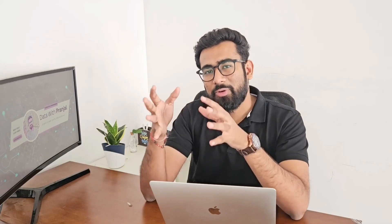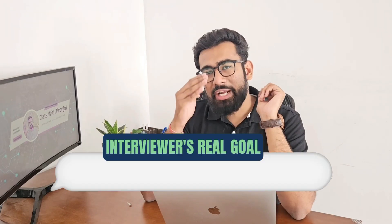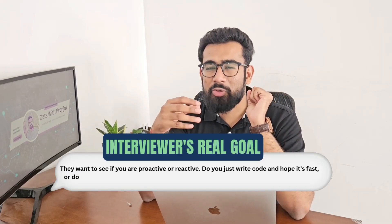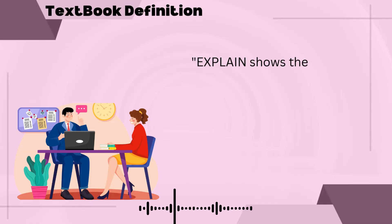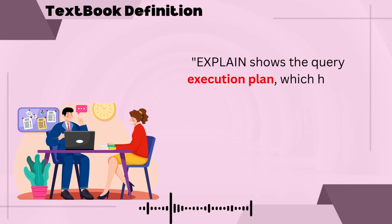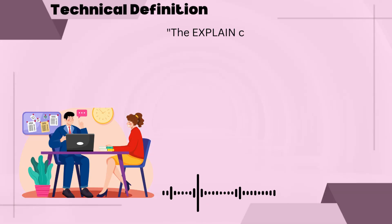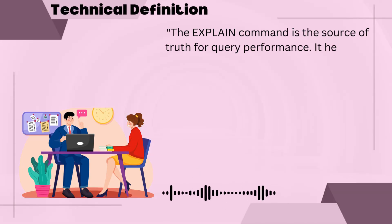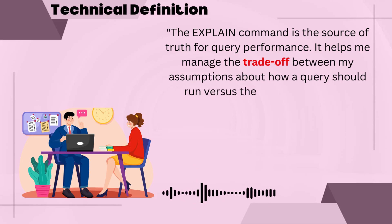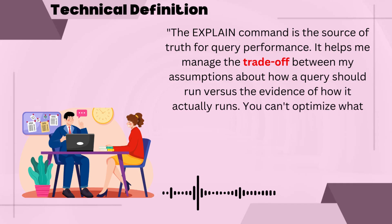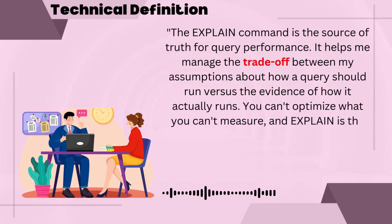The fifth and last question: the EXPLAIN keyword. The interviewer's goal here is to understand whether you actually optimize queries when they are not performing well. The textbook answer is: EXPLAIN shows the query execution plan which helps in optimization. With our framework, we talk about the trade-off first. The EXPLAIN command is the source of truth for query performance. It helps me manage the trade-off between my assumptions about how a query should run versus the evidence of how it is actually running. You can't optimize what you can't measure, and EXPLAIN is the primary measurement tool.